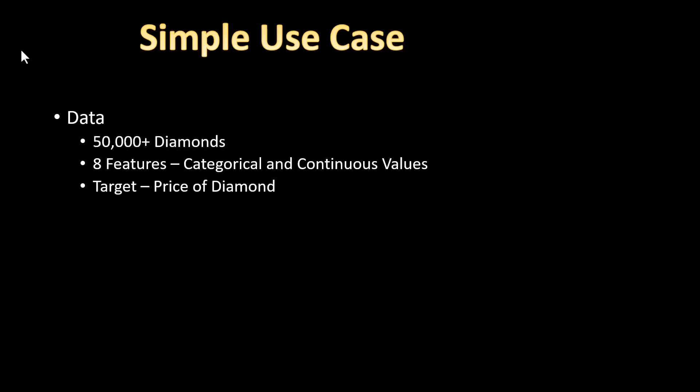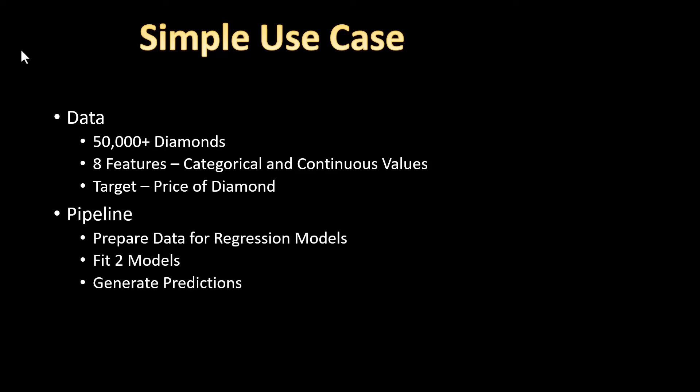Let's take a look at a simple use case. Our data is a dataset with information on more than 50,000 diamonds. For each diamond, we have eight features, some categorical and some continuous. Our target is the price of the diamond. We build a pipeline that prepares the data for two different regression models and generate predictions. We create scenarios by allowing the user through the GUI to select features to exclude, to compare the performance of these algorithms based on the selected and included features.